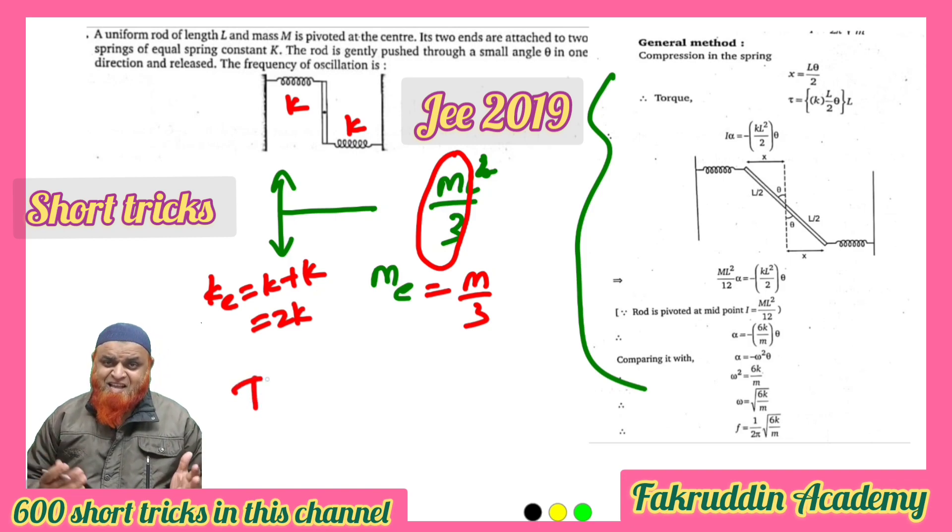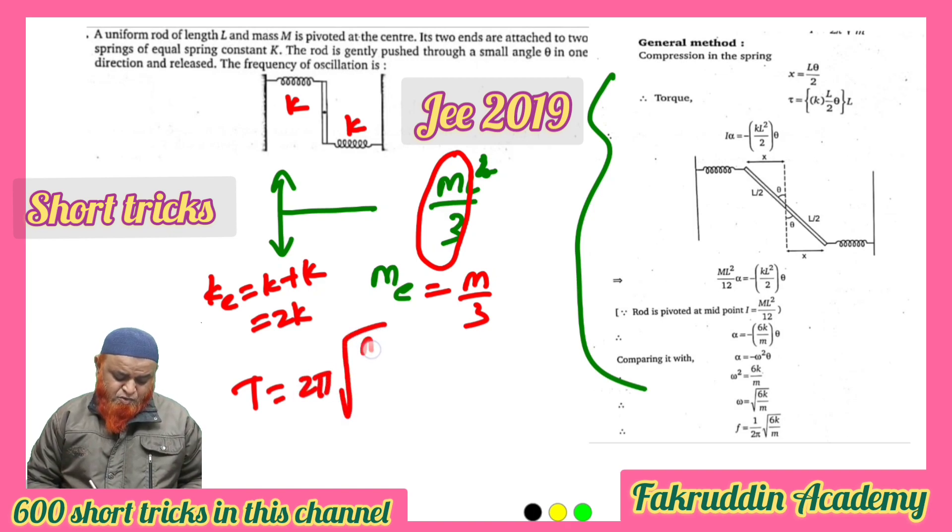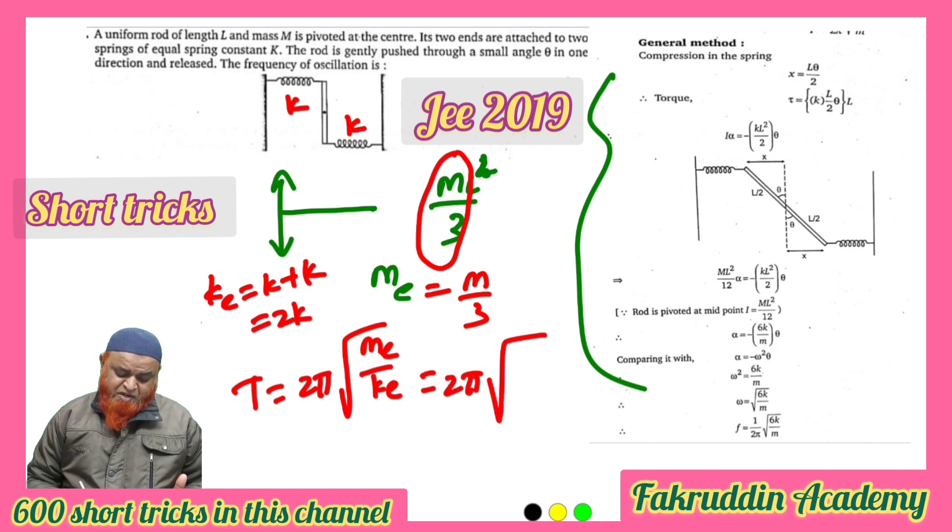It's a general formula, natural formula, that is T equals 2π root of m effective by k effective. That's it, your work is done, finish. So there is going to be 2π root of m effective - m effective is going to be m by 3 - and there is going to be 2k.